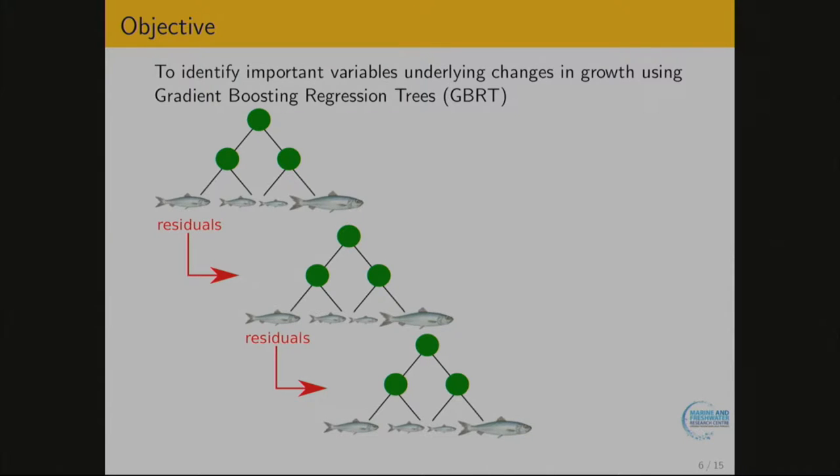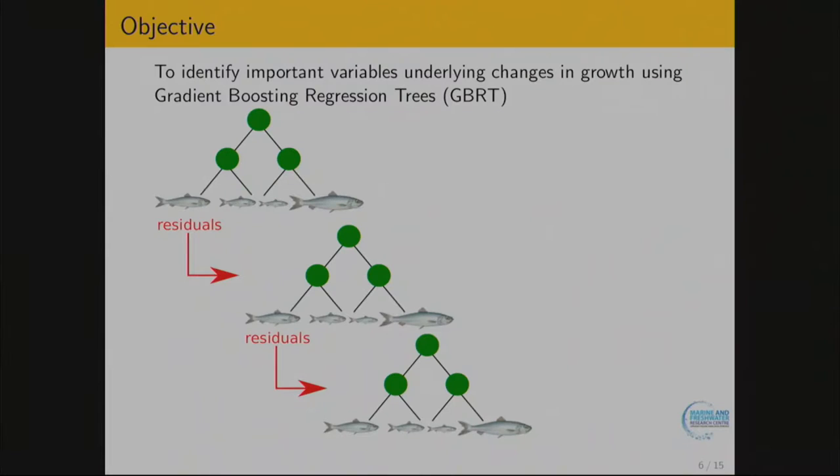Why ensemble? It's because we don't have one tree — we have a collection of trees, and the final model is improved because of that collection. As opposed to bagging or random forest, where trees are independent, in gradient boosting all trees are dependent: the residuals of one tree — the unexplained part — are entered as input into the next tree. We have a sequence of interconnected trees, which allows us to reduce variance and reduce bias. The only drawback is that because they are linked sequentially, we can't parallelize the algorithm.